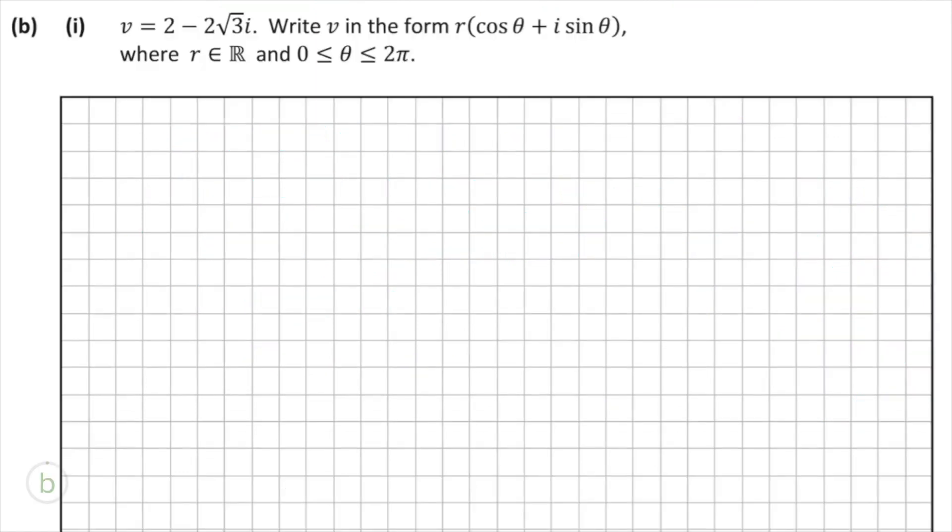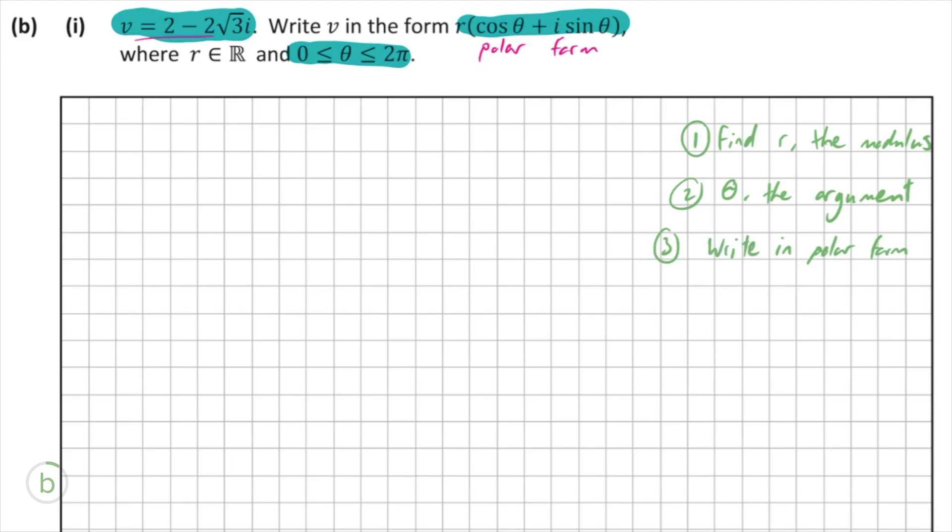So b part 1 asks us, given that v is equal to 2 minus 2 root 3 i, to write v in the form r cos t plus i sine t. Our r is a real number, and t is between 0 and 2 pi. So this r cos t plus i sine t form is known as polar form. So currently v is in rectangular form, but we've got to convert it to polar form, and the steps to do this are first to find r, the modulus of v, and secondly to find theta, the argument of v, and lastly just to write this in polar form, because that's what we're asked to do.